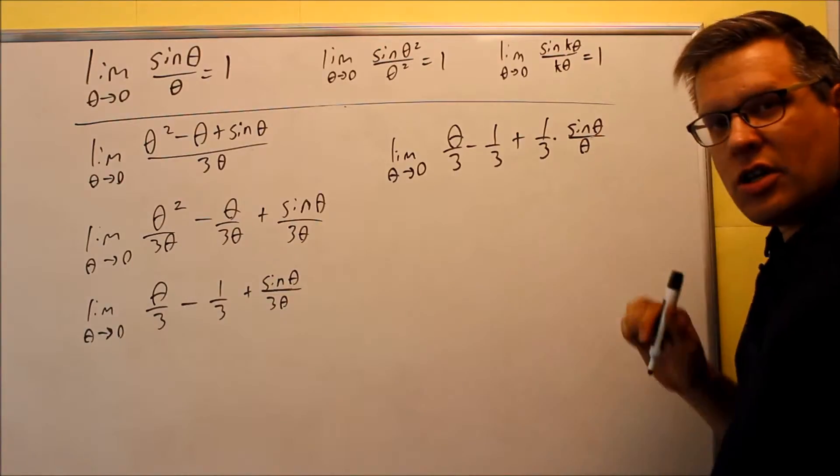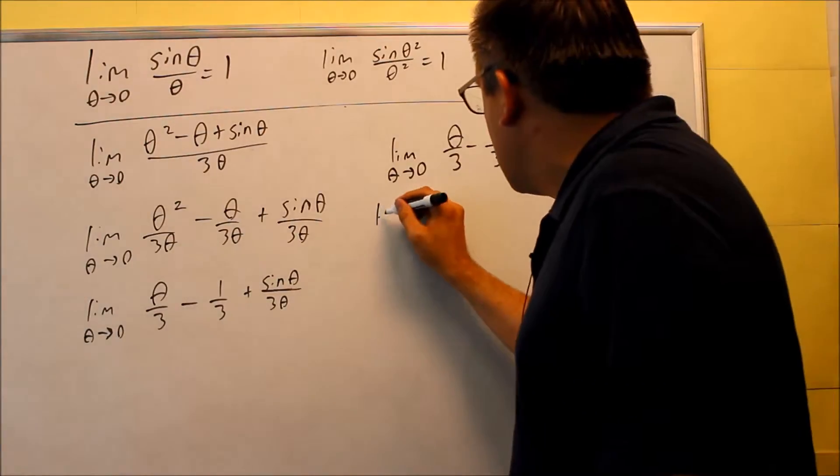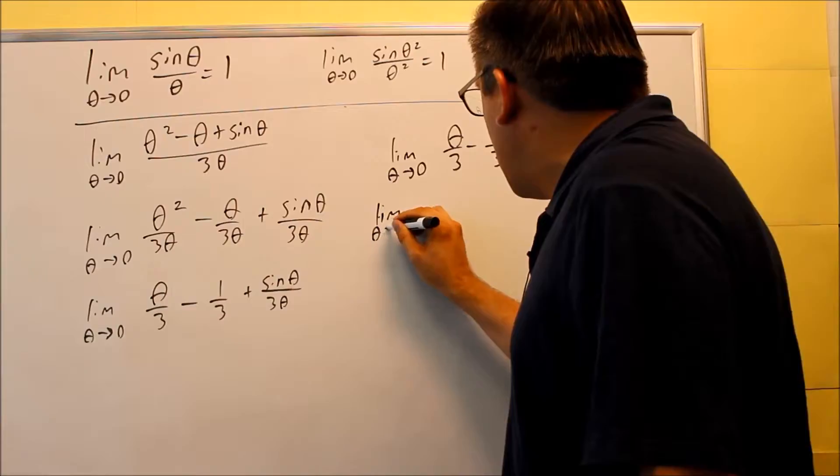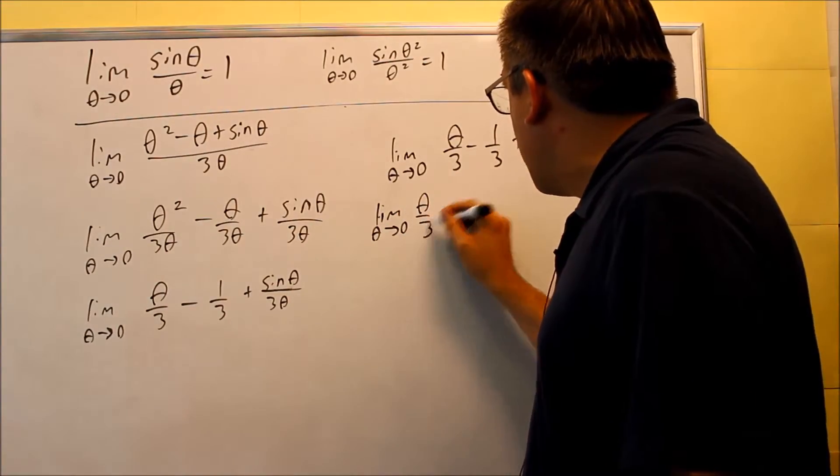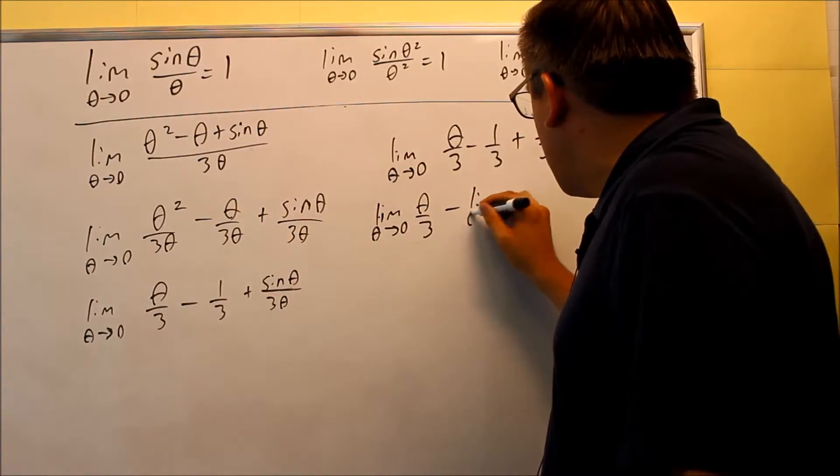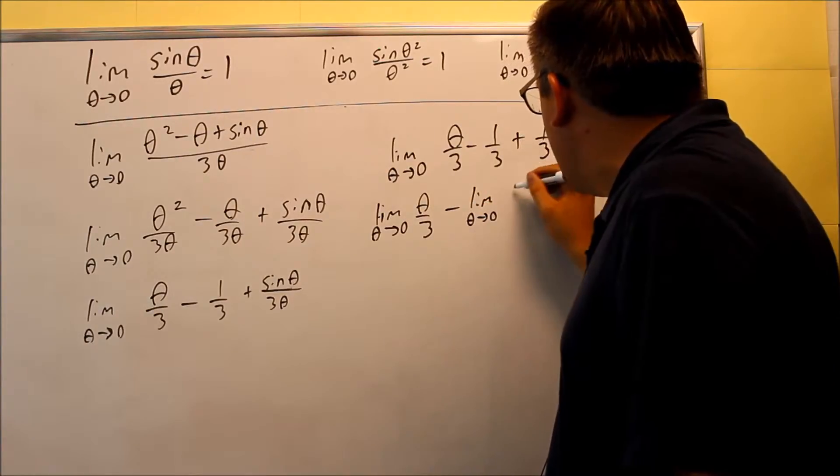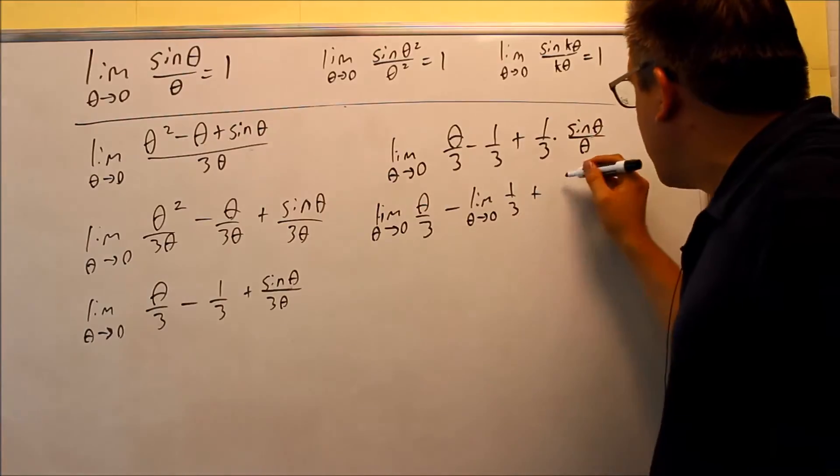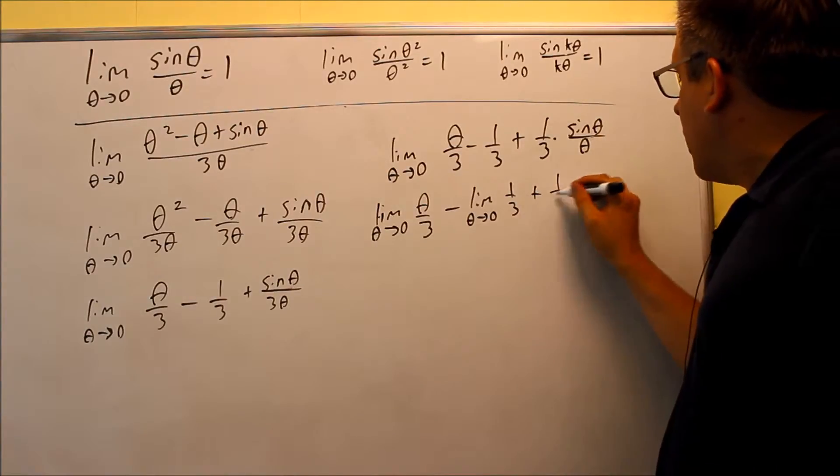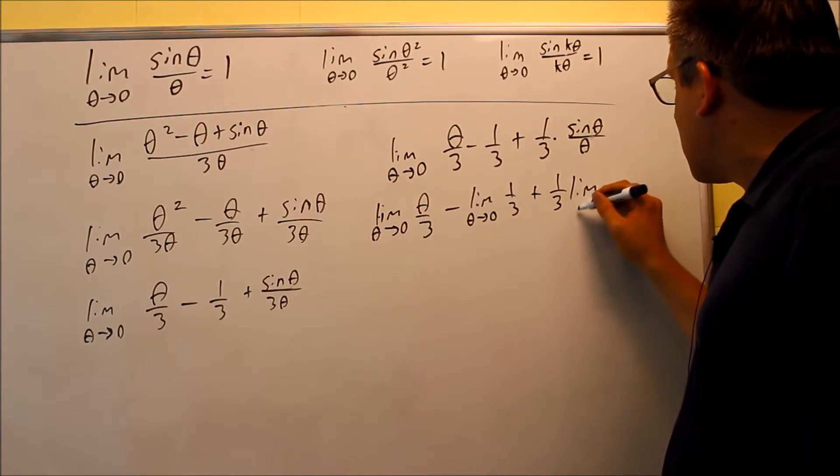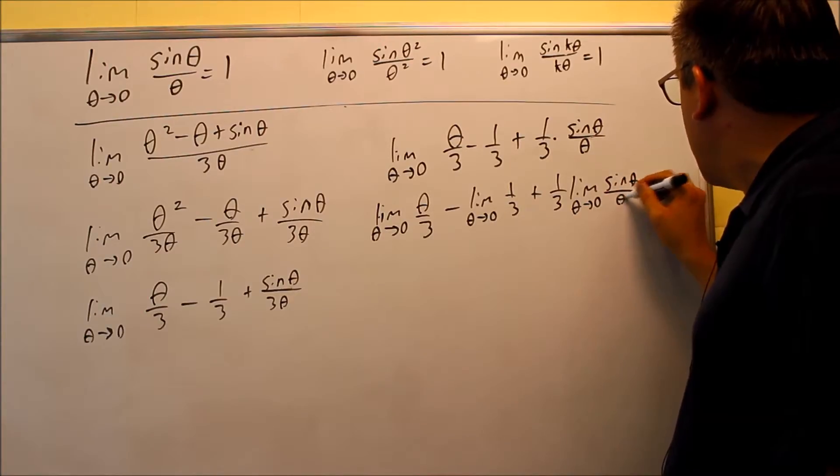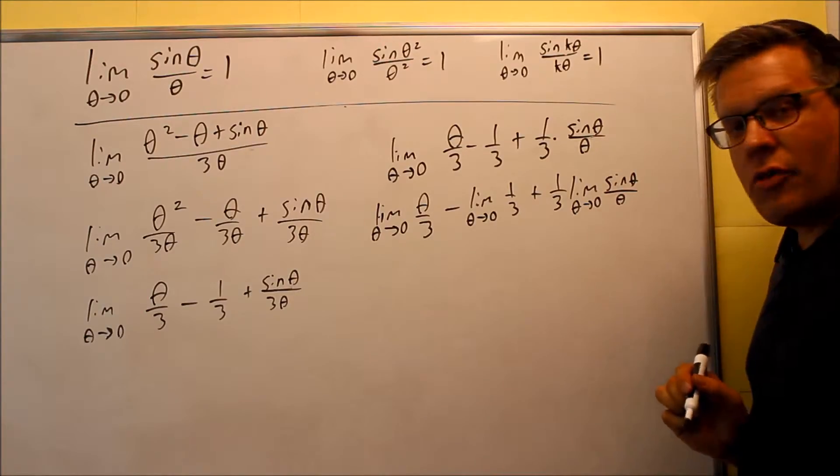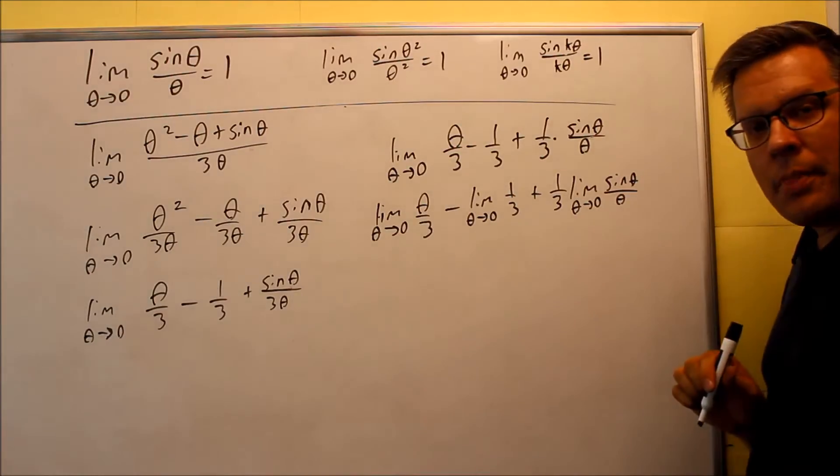Now I'm going to apply the limit to each one of these things separately. This is basically using the limit properties. So I'm going to do limit as theta goes to zero of theta over three and then limit theta goes to zero of one third and then plus. When I apply the limit here, the one third can actually come on the outside. So I'm going to write it this way and just leave the sine theta over theta by itself.